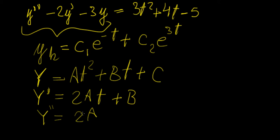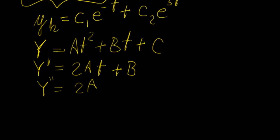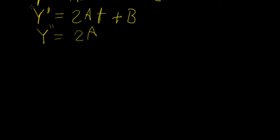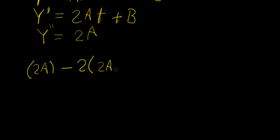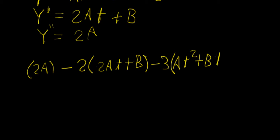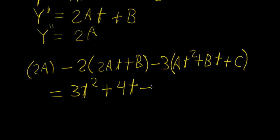What we're going to do now is substitute these terms into the whole differential equation, and that's going to give us something that allows us to solve for those three constants a, b, and c. So we're going to have y double prime comes first, minus 2 times y prime — so that's 2at plus b — and we have minus 3 times y, which is at squared plus bt plus c, and all of that is going to be equal to 3t squared plus 4t minus 5.